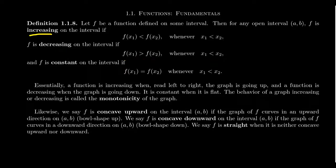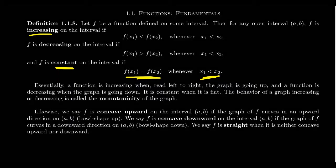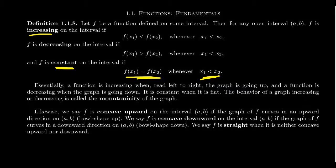Similarly, we say a function is constant whenever f(x₁) equals f(x₂), even when the x-coordinates differ from each other. So in a nutshell, as we read the graph left to right: if the graph's going up, we say it's increasing; if the graph's going down, we say it's decreasing; if the y-coordinates aren't changing at all, we say it is constant. If the function is increasing or decreasing, we say that it's monotonic on the interval.